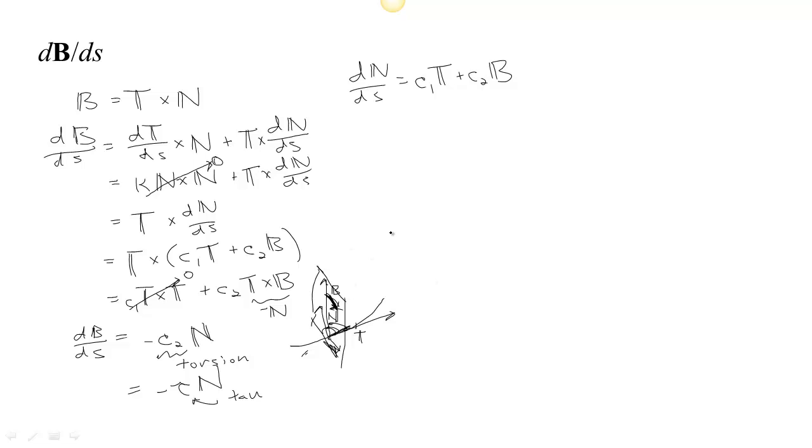Now, to actually calculate torsion, one thing that you can do is to take, if we were to take both sides of this equation, so we have dB/ds is equal to minus tau N. If we dot both sides with N, we get dB/ds equals minus tau N dot N. So both sides are being dotted by N here.